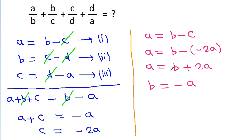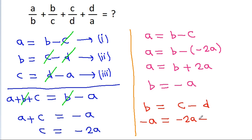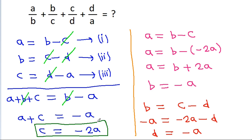Now, equation 2 is b is equal to c minus d. Substituting b as minus a and c as minus 2a, we get minus a is equal to minus 2a minus d, so d is equal to minus 2a plus a, which gives d is equal to minus a. So we get c is equal to minus 2a, b is equal to minus a, and d is equal to minus a.